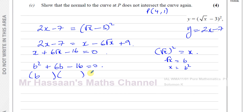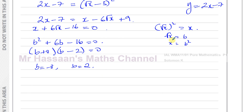Factorising b² + 6b − 16 = 0: we need two numbers that multiply to −16 and add to +6, which are +8 and −2. So (b + 8)(b − 2) = 0, giving b = −8 or b = 2. Since b = √x, we have √x = −8 or √x = 2.